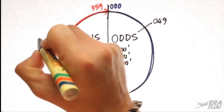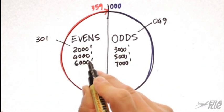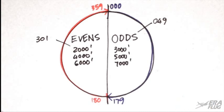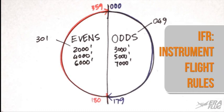Similarly, if we had a magnetic track of 301, falling in the even sector, we would have an altitude of 2,000 feet, 4,000 feet, 6,000, and so on. All of these, so far, refer to flights conducted under IFR, which, as we have seen in the glossary, refers to Instrument Flight Rules.